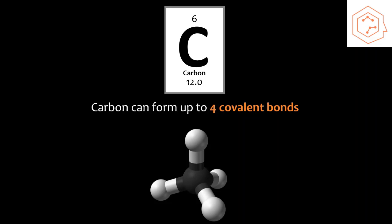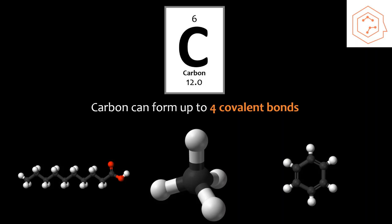Primarily, carbon can form up to four covalent bonds, which allows it to act as a backbone in a variety of molecules that can vary in their shape and size. The main two structures that we see are chains and rings.